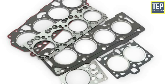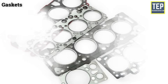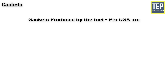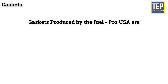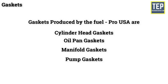Materials used for gaskets are cork, asbestos, and rubber. Types of gaskets include cylinder head gaskets, oil pan gaskets, manifold gaskets, and pump gaskets.